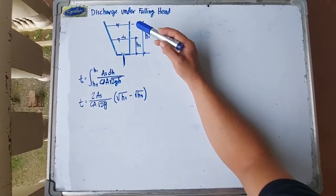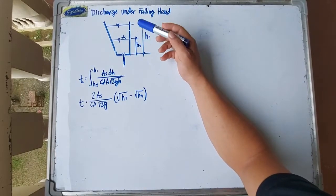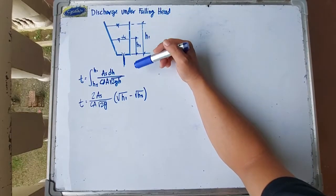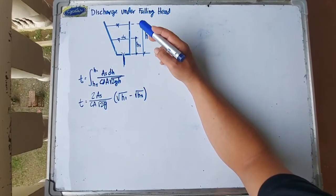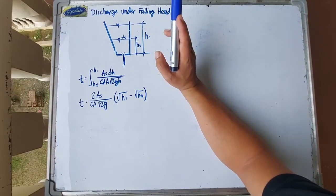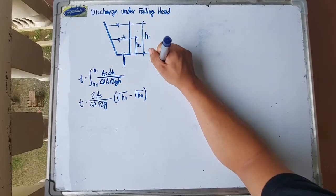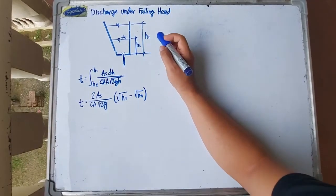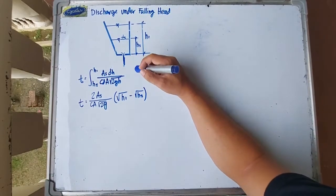With liquid inside the tank, we usually solve for the time needed to lower the height of the liquid from one level to a certain lower height, or the time to empty the tank. We have several cases in your modules. I will no longer derive the formula as that would prolong our discussion.